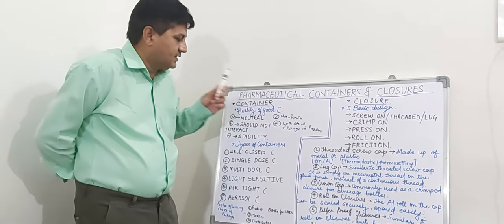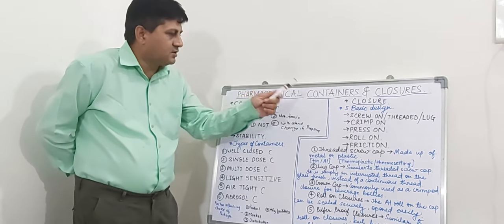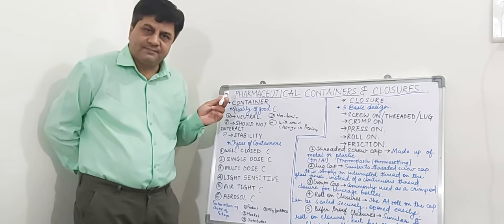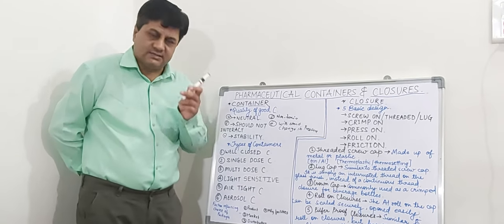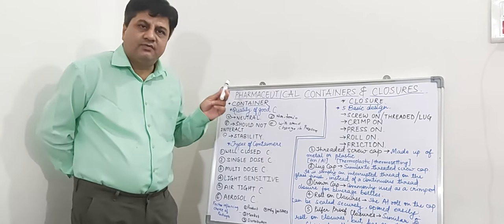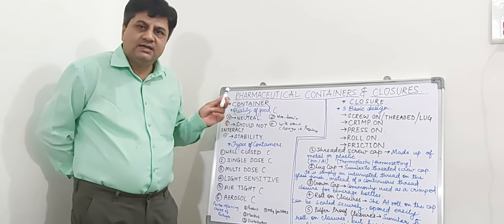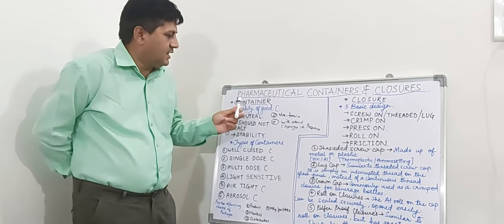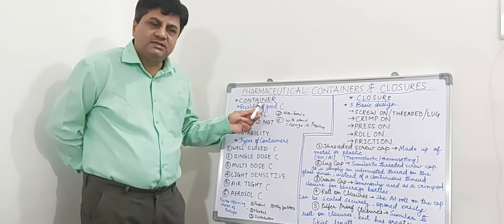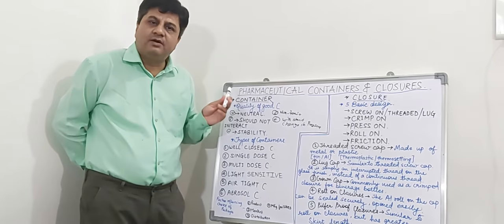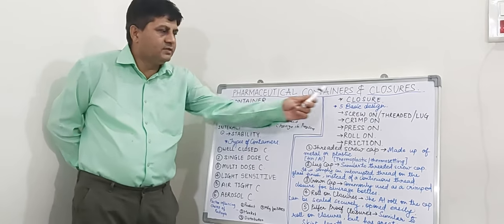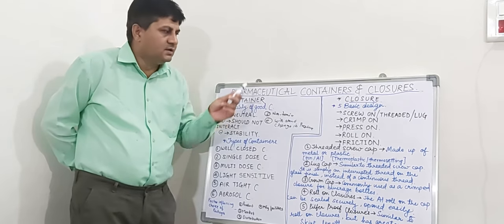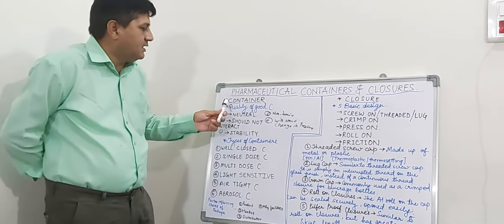Let us have a look at the containers first, because the closure is a part of the container, so first we have to understand what containers are. For pharmacopoeial articles, containers are intended to contain a drug substance or drug product which are in direct contact with the containers. That is why these containers play a very important role in pharmaceuticals. The closures are also part of these containers.